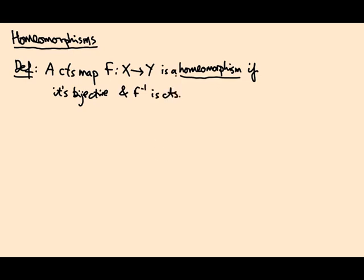So if two topological spaces admit a homeomorphism between them, then they're essentially the same topological space. This is like an isomorphism in the category of topological spaces. Let me give you an example to show why this condition that the inverse is continuous is a necessary condition to put into the definition.